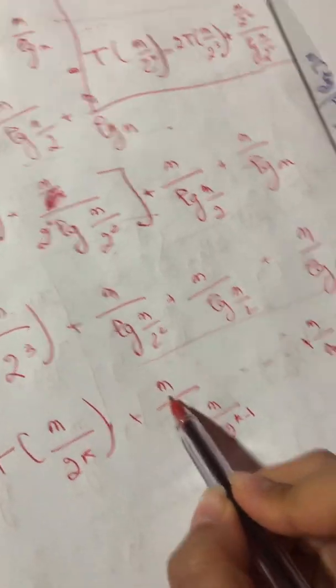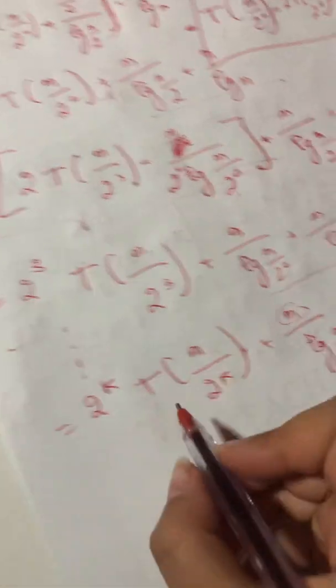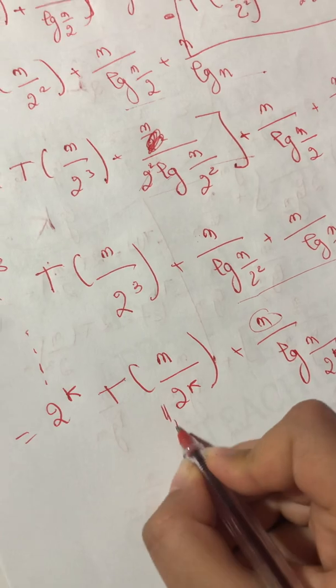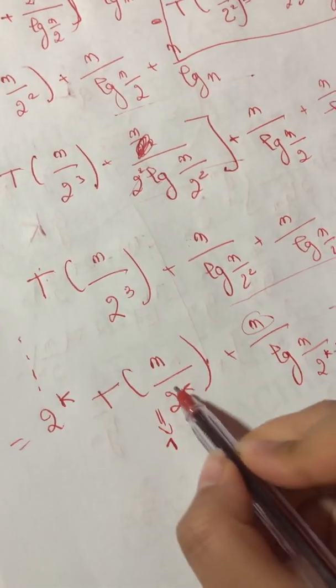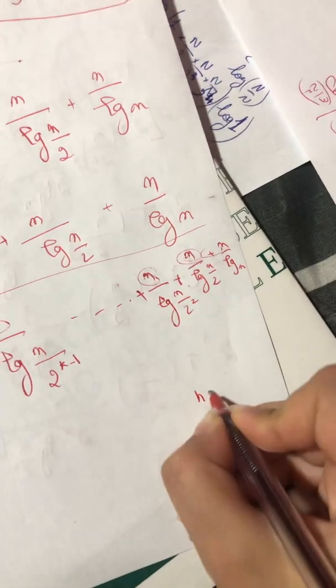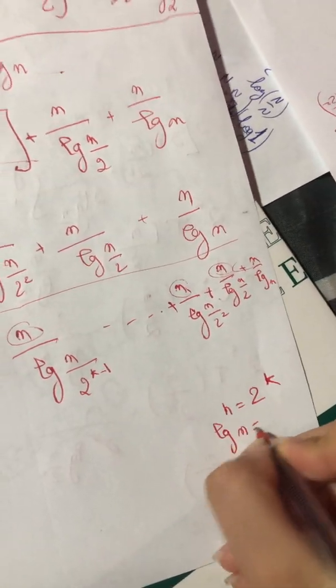I can take n as a common factor. And I know that T(1) equals 1, so this is 1. This is 1 when T(1) equals 1. So I have n equals 2^k in this case. So log n equals k.